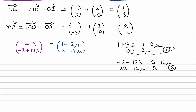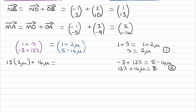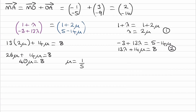We solve equations 1 and 2 simultaneously by substituting λ = 2μ into equation 2: 13·(2μ) + 14μ = 8, giving 26μ + 14μ = 8, so 40μ = 8, and μ = 8/40 = 1/5. Since λ = 2μ, we get λ = 2/5.